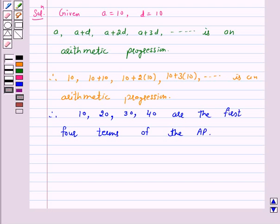Hence, the answer for the above question is 10, 20, 30, 40 are the first four terms of an AP.